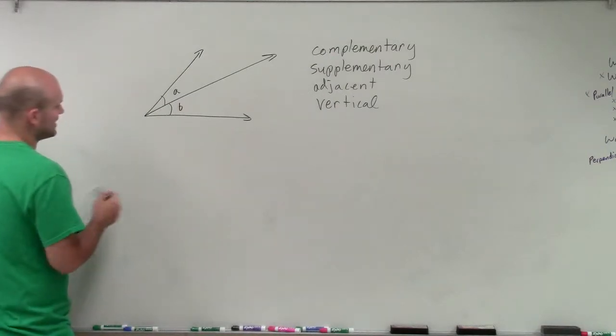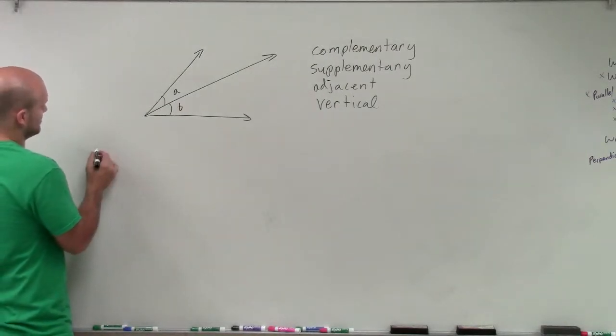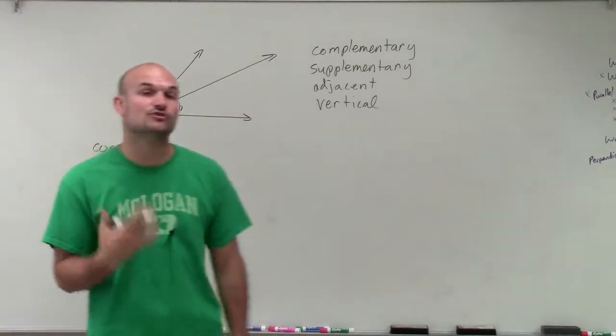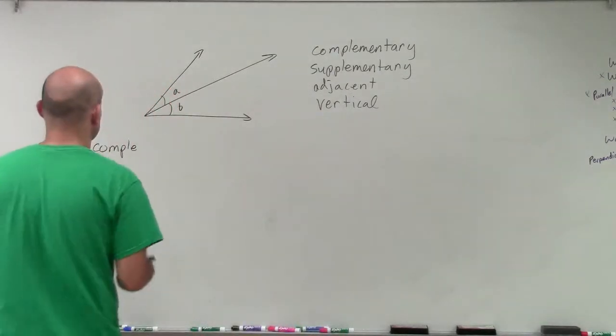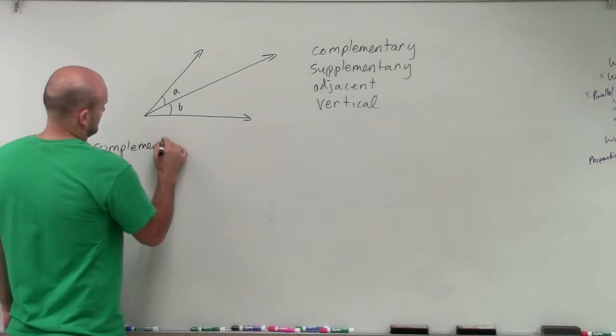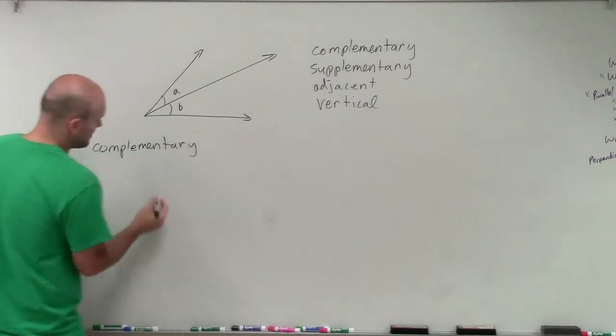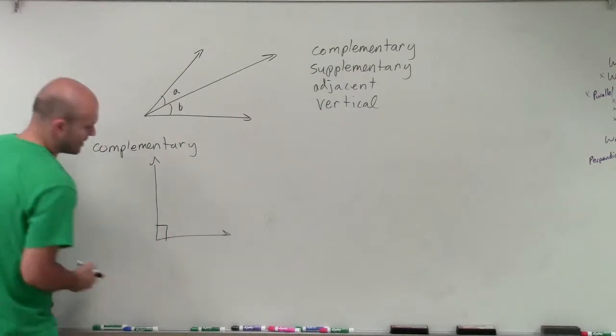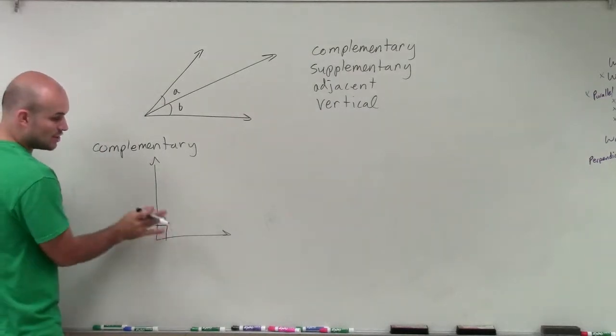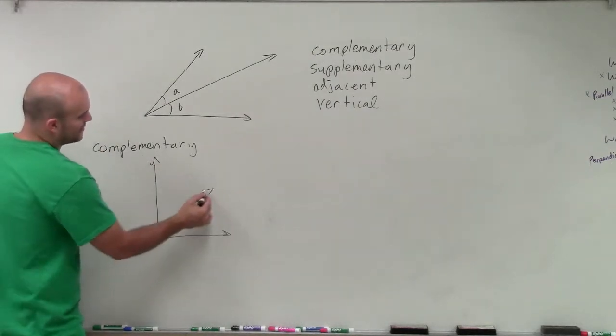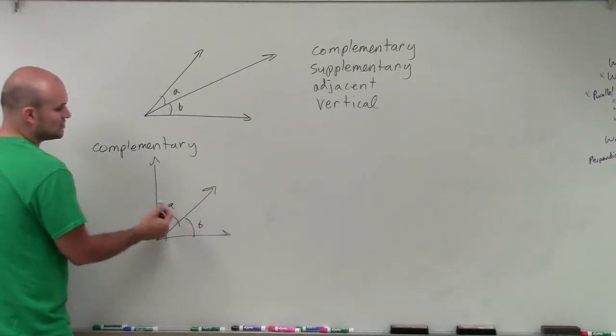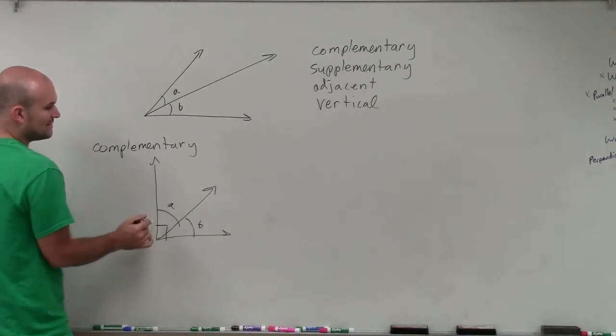So when dealing with complementary angles, let's start with complementary. Complementary angles are going to be two angles whose degree measures add up to 90 degrees. Now we can represent 90 degrees as a right angle. So if I have a right angle and I know that it's 90 degrees, if I was going to create two angles, let's say A and B again, if those two angles add up to give me 90 degrees, I have complementary angles.